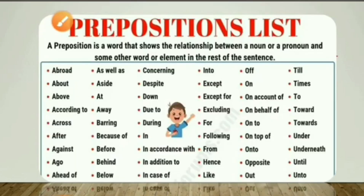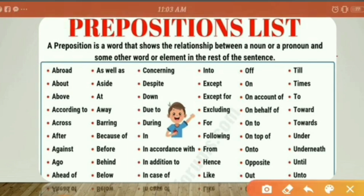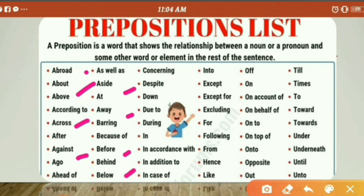Let's move on. Now I have a list of prepositions in front of you. First of all, look at the list: abroad, about, above, according to, across, after, against, ago — you can read all the prepositions here, which we use in various sentences.